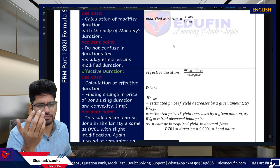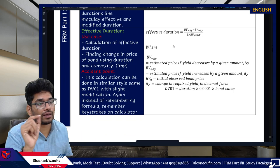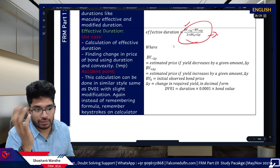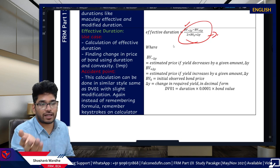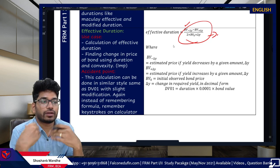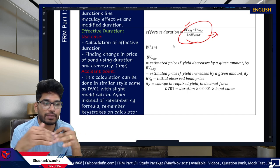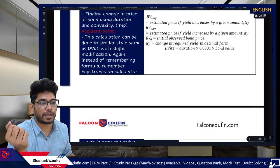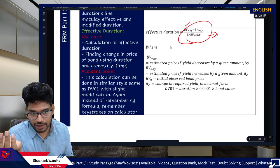Modified duration: not testable. Effective duration: highly testable. Formula: (BV_minus_delta - BV_plus_delta) / (2 × BV0 × delta_yield). BV_minus_delta is the bond price if yield decreases; BV_plus_delta is the bond price if yield increases. GARP will provide these directly.